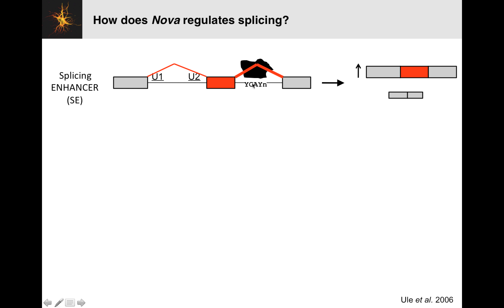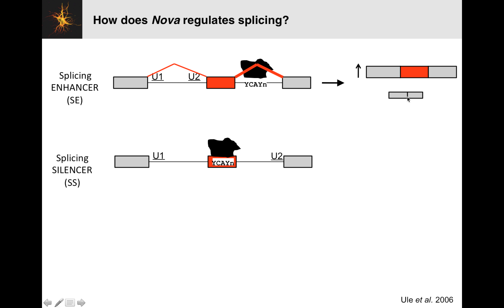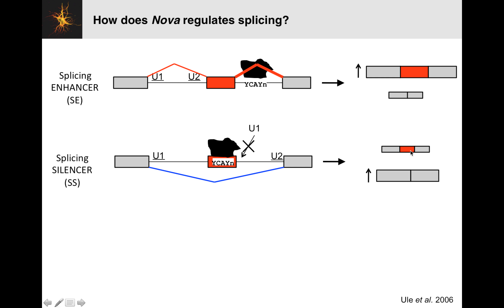If NOVA binds just downstream of the exon, it will increase the rate at which that exon is included — increasing the rate that the transcript including the exon is produced, and reducing the rate at which the transcript that does not include the exon is produced. On the other hand, if in some other gene with some other exon, this NOVA binding site is on top of the exon, it'll have the opposite effect. It's going to block the splice zone coming in, and now the transcript that includes the exon will be less frequent and the one that excludes it will be more frequent.